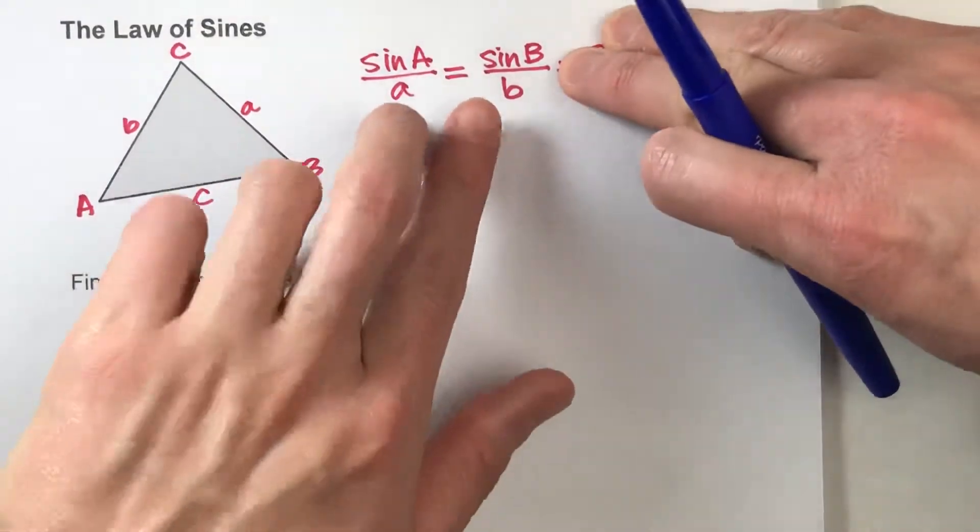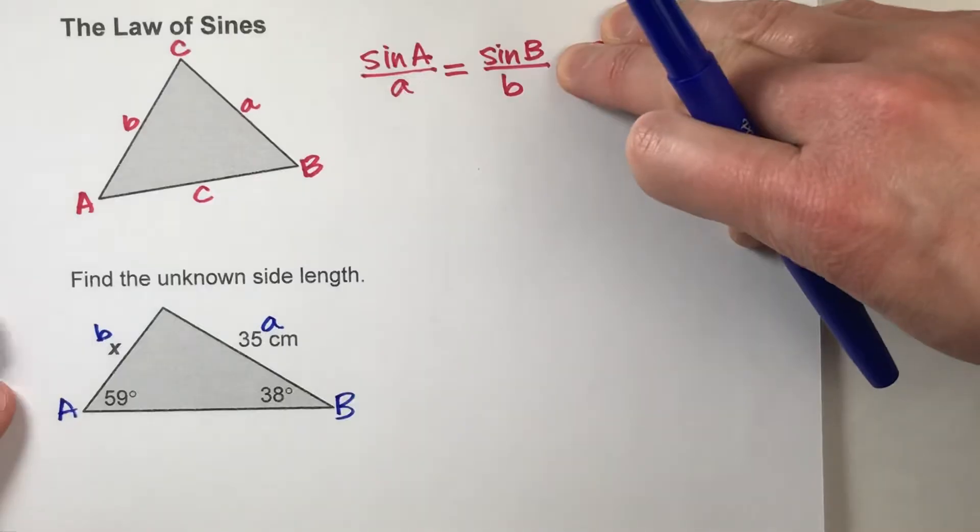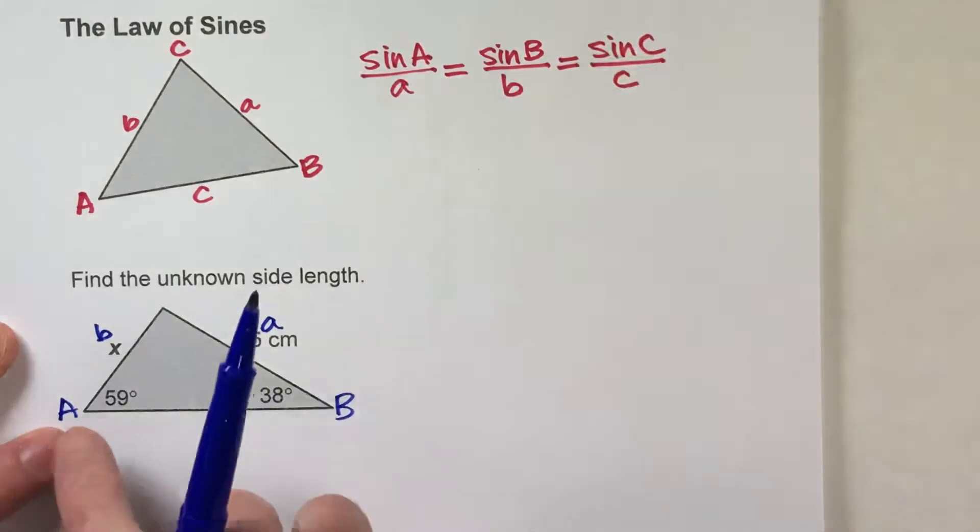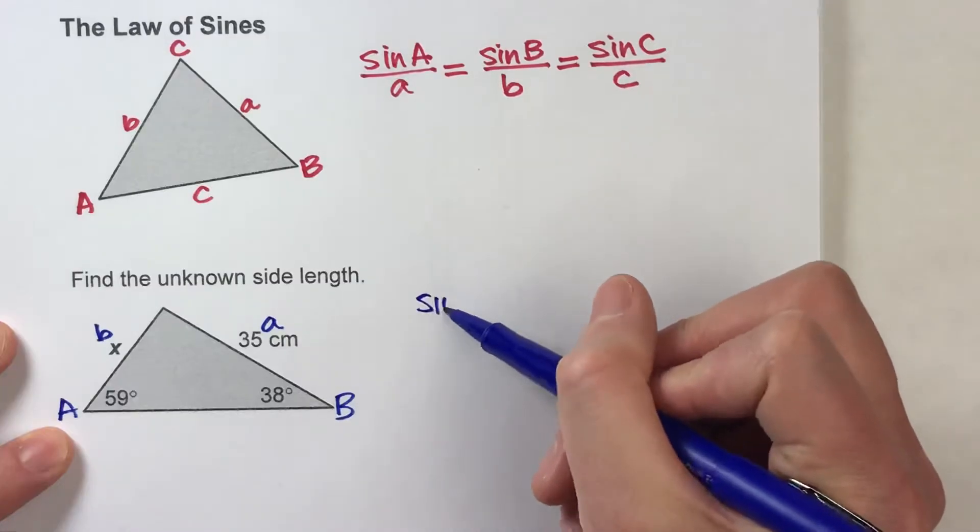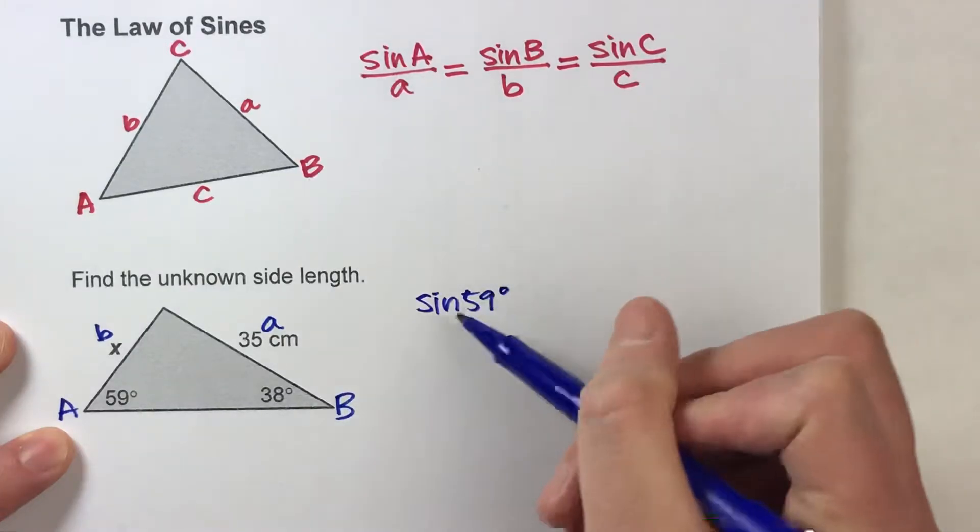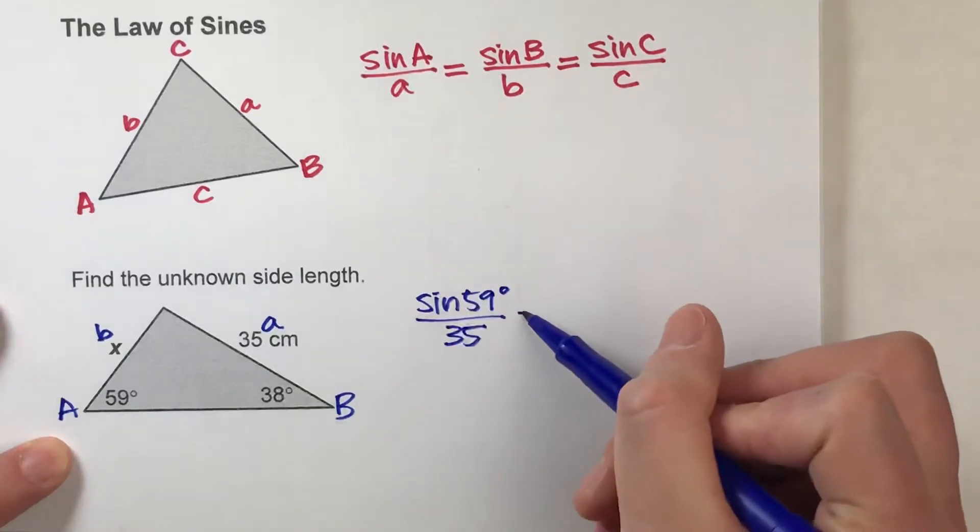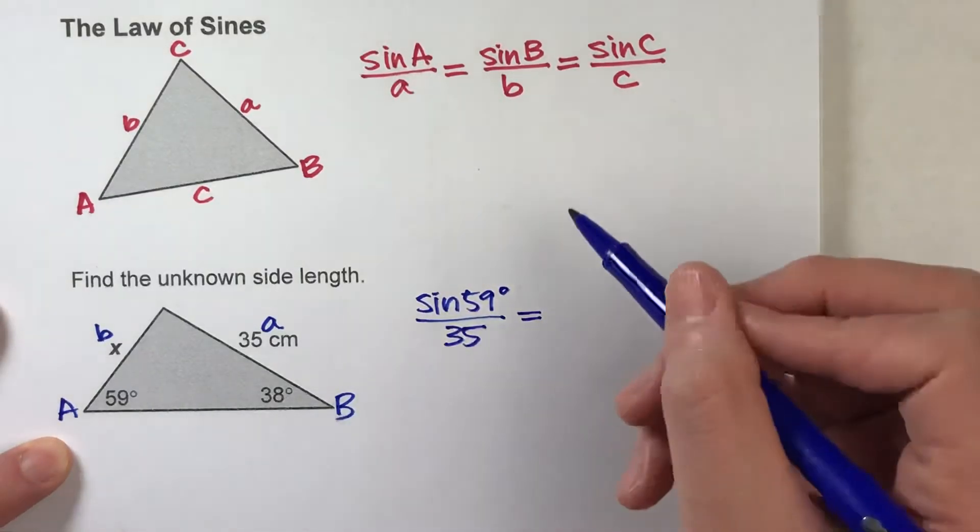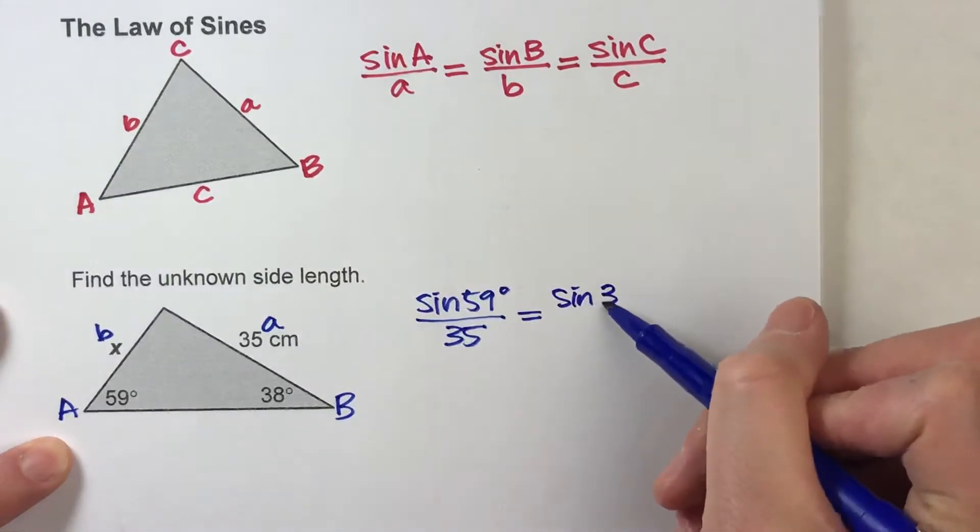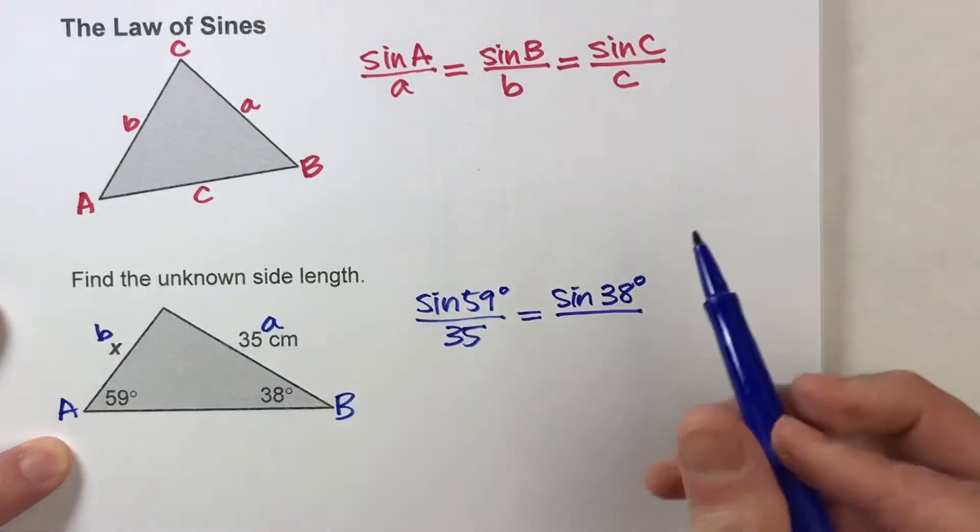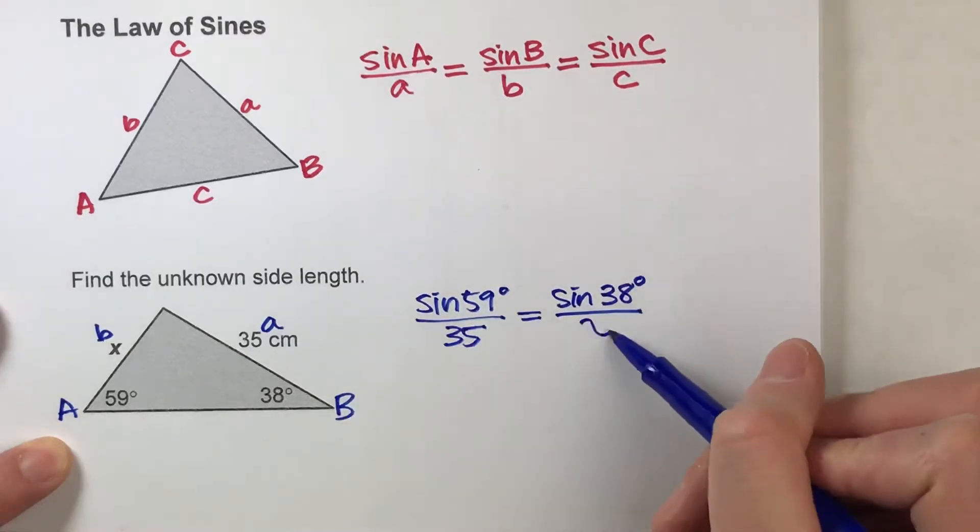So we're going to use these two parts of the law of sines, which says the sine of angle A, the sine of 59 degrees, divided by the length of the side across from it, has to be equal to the sine of angle B, sine of 38 degrees, divided by the side length across from it, which is x.